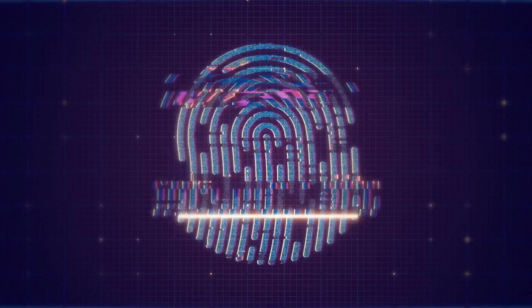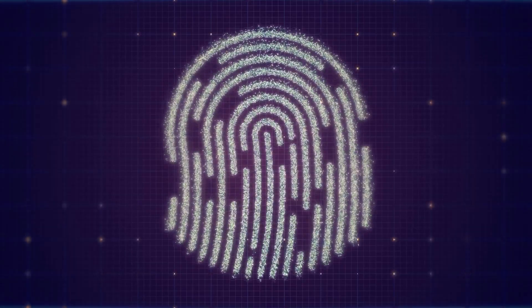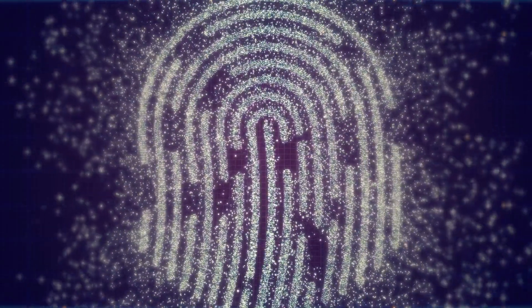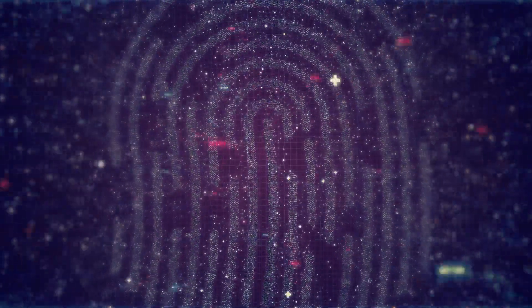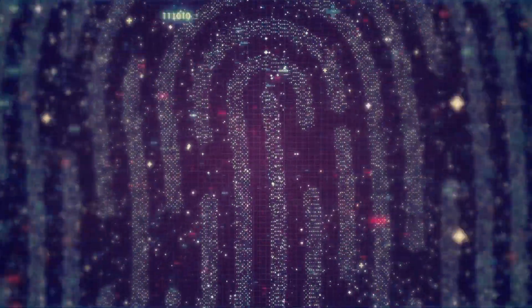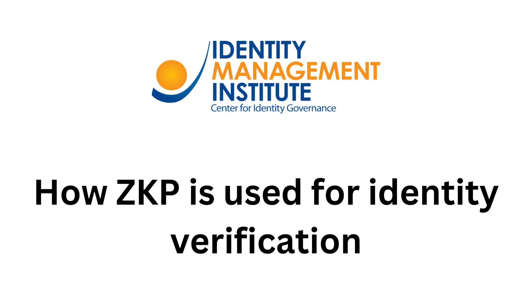Zero-knowledge proof can be used for identity verification by allowing a user to prove their identity without revealing any sensitive information. Here is an example of how ZKP can be used for identity verification.